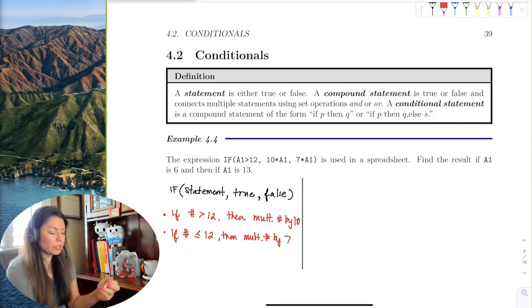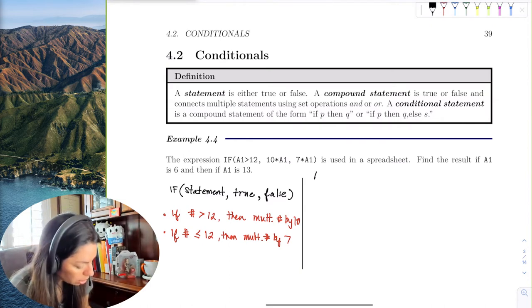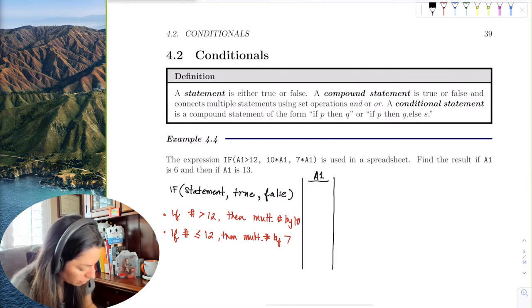So essentially what you're doing is you're going to look at the cell. Here's A1, so here's like the cells and they have numbers in here.